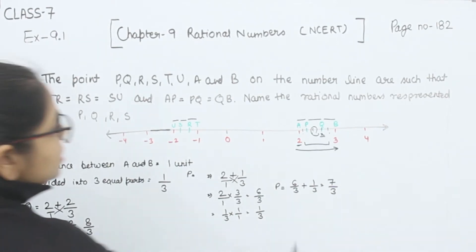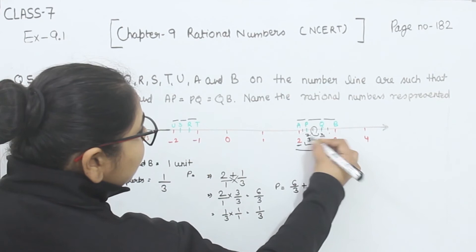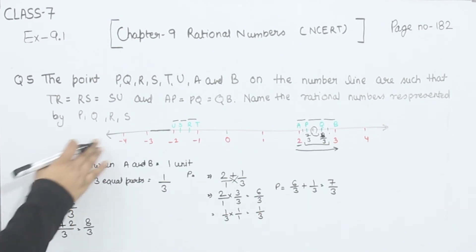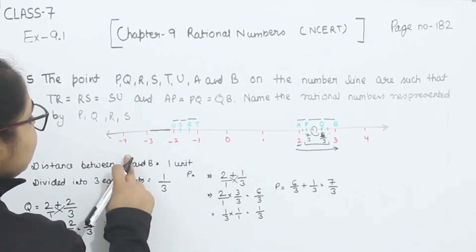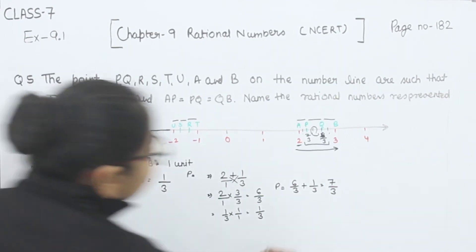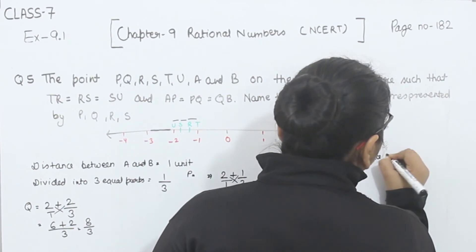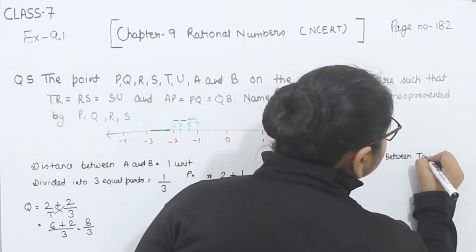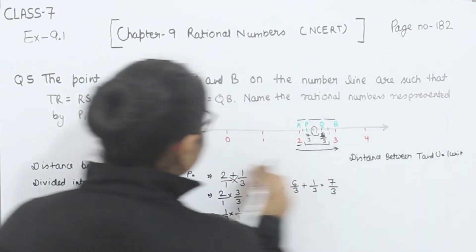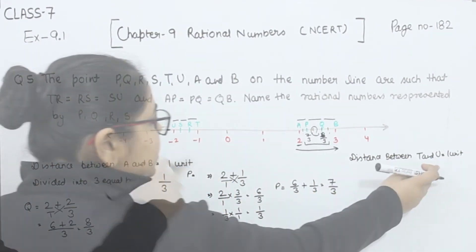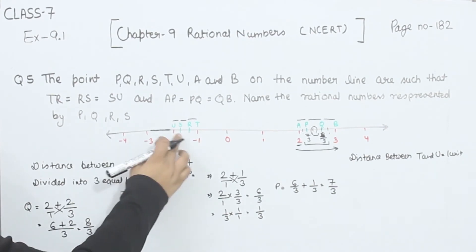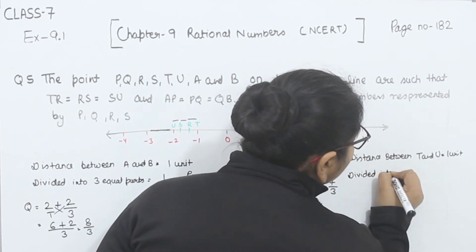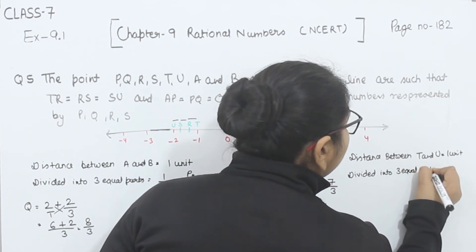Now similarly, the distance between T and U is 1 unit — from minus 1 to minus 2 — a distance of 1 unit. Now this has been divided into 3 equal parts.